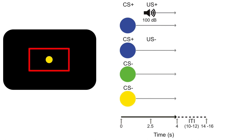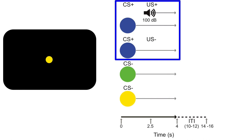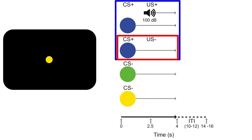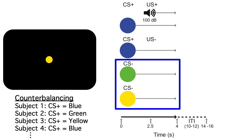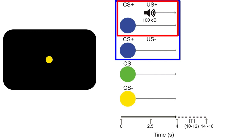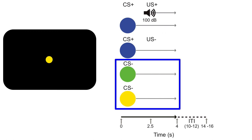The colored circle in the middle of the display was one of three different colors: blue, green, or yellow. One color was the conditioned stimulus or CS+, which was associated with the white noise burst. When the CS+ was presented, it had a 50% chance of being followed by the noise burst 2.5 seconds after the onset of the CS+. These are called CS-plus US-plus trials. On the other 50% of CS-plus trials, no noise burst was presented — these are CS-plus US-minus trials. The other two colors were associated with the absence of the noise burst and were called CS-minus stimuli. We counterbalanced which color was CS-plus and which colors were CS-minus. Participants learned that the aversive noise burst often occurred following the CS-plus color but never following the CS-minus color. The question was whether the CS-plus would elicit a larger LPP than the CS-minus.